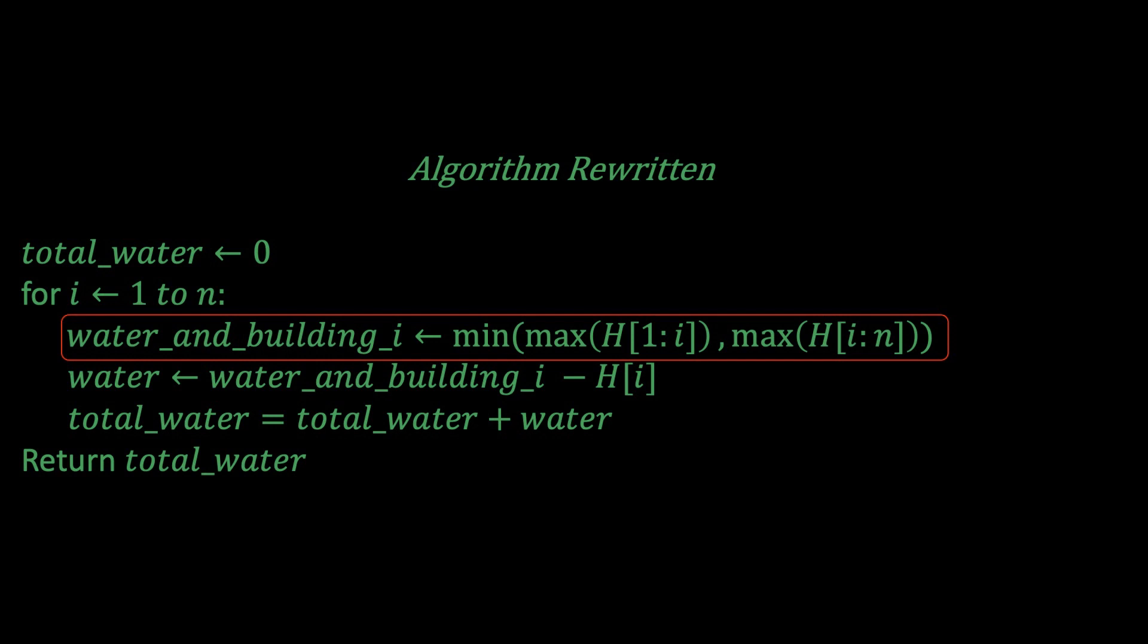Now the reason why I introduced this notation and rewrote the algorithm in this way is because oftentimes when you're solving problems such as this one, seeing a min-max or a max-min operation often helps you to apply a ton of cool tricks to speed up your solution. I'm going to have another video which is entirely dedicated to min-max and max-min operations, but for now just know that when you see a min-max or a max-min there is often very cool speed up tricks to optimize your solution.